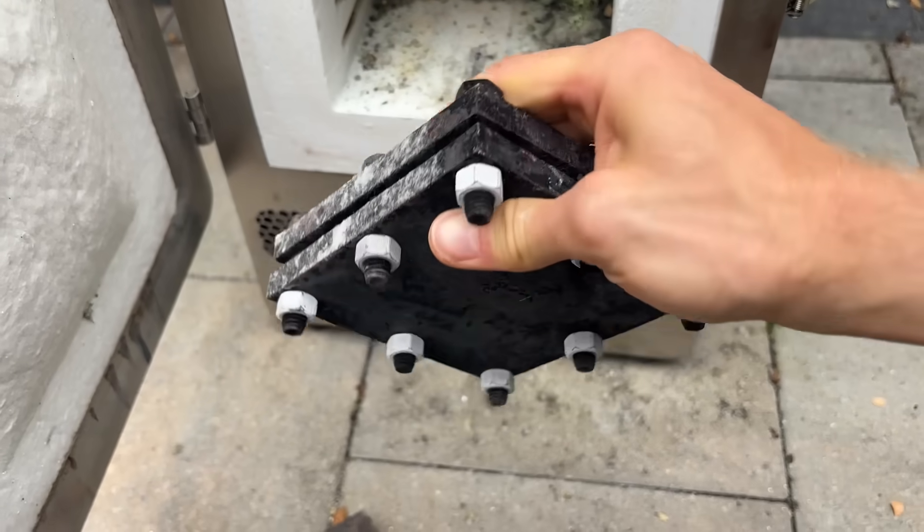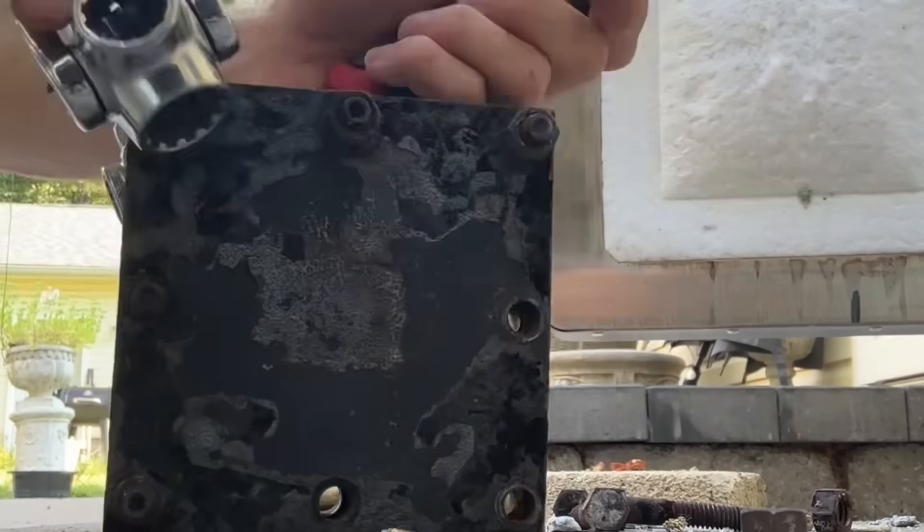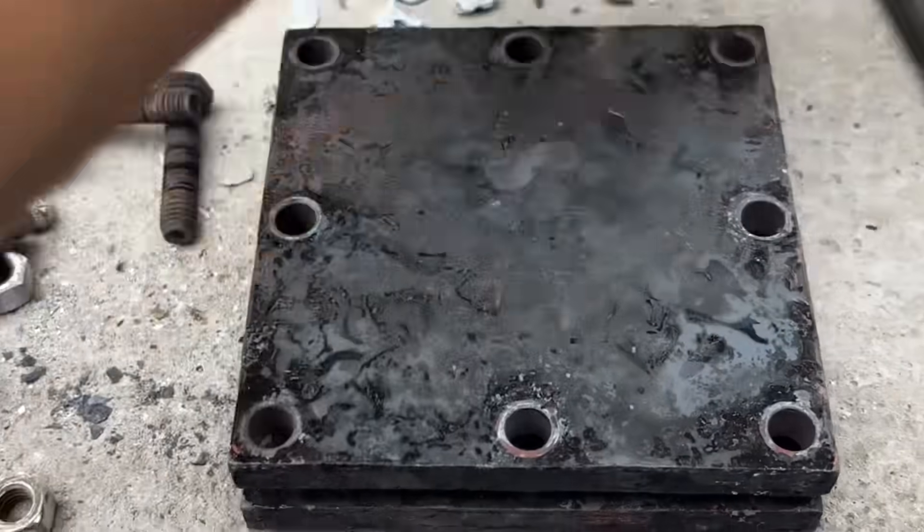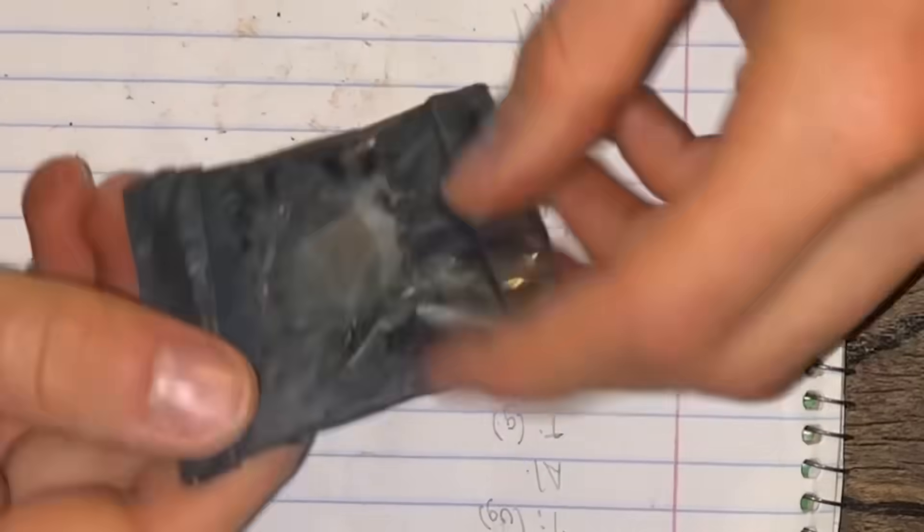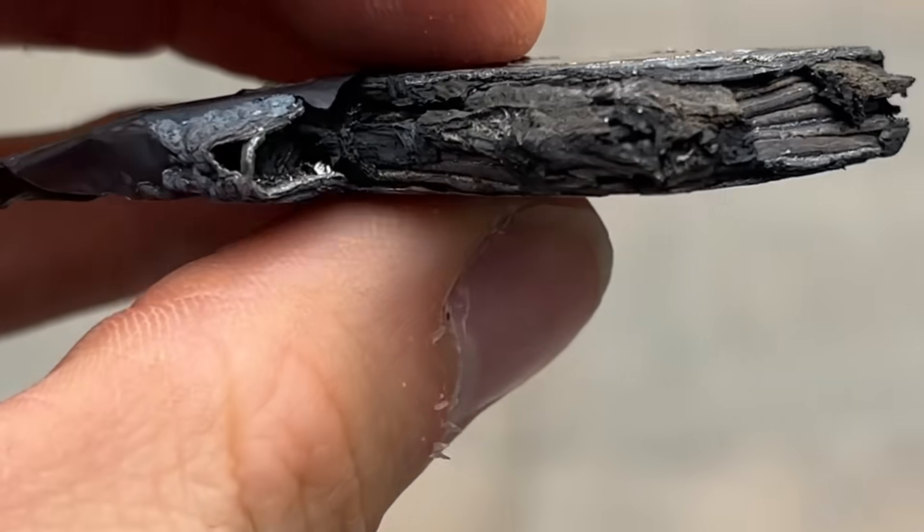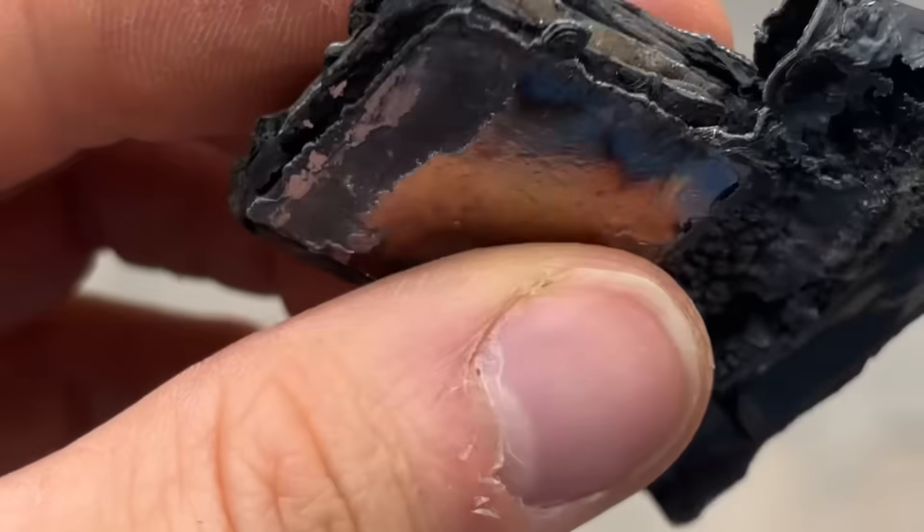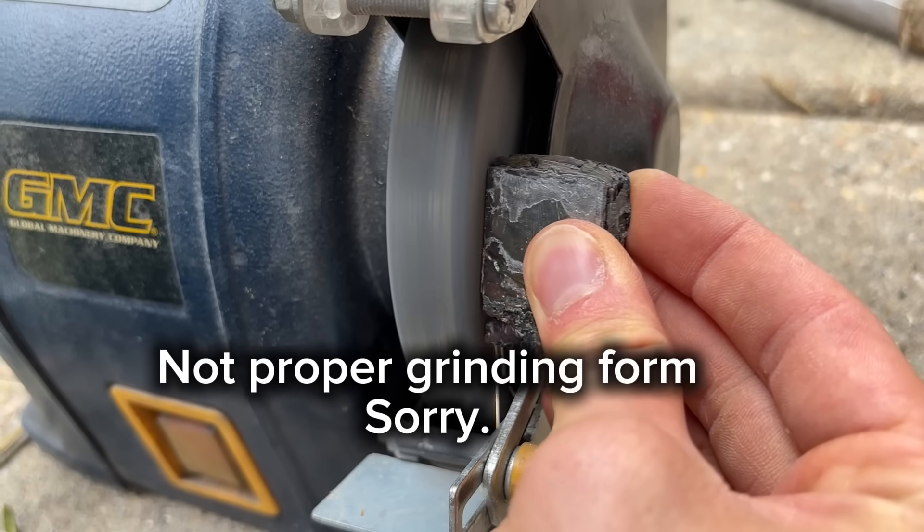After everything cooled, I could begin disassembling the pressure vessel and take out my sample. And kind of unsurprisingly, it looks pretty bad. And at this point, I was really wondering if there was any titanium at all left here, or if everything was just converted to oxide. But there was only one way to find out, and that's grinding it down to get rid of this mess.